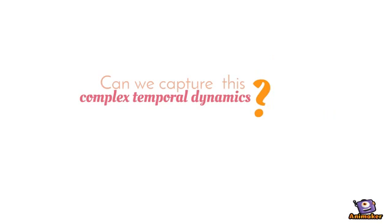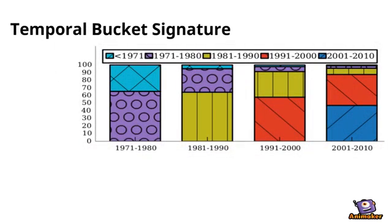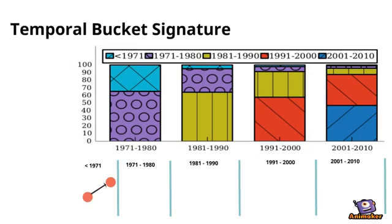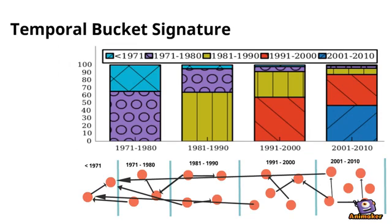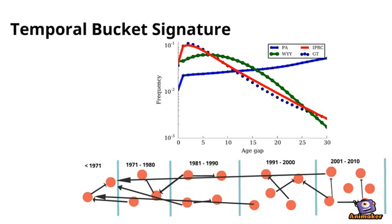To remedy this, we introduce temporal bucket signatures and related graph summaries. We bucket node births along time and plot the relative fraction of links to earlier buckets in different colors. We plot the fraction of links that span a given node age difference in an age gap histogram.